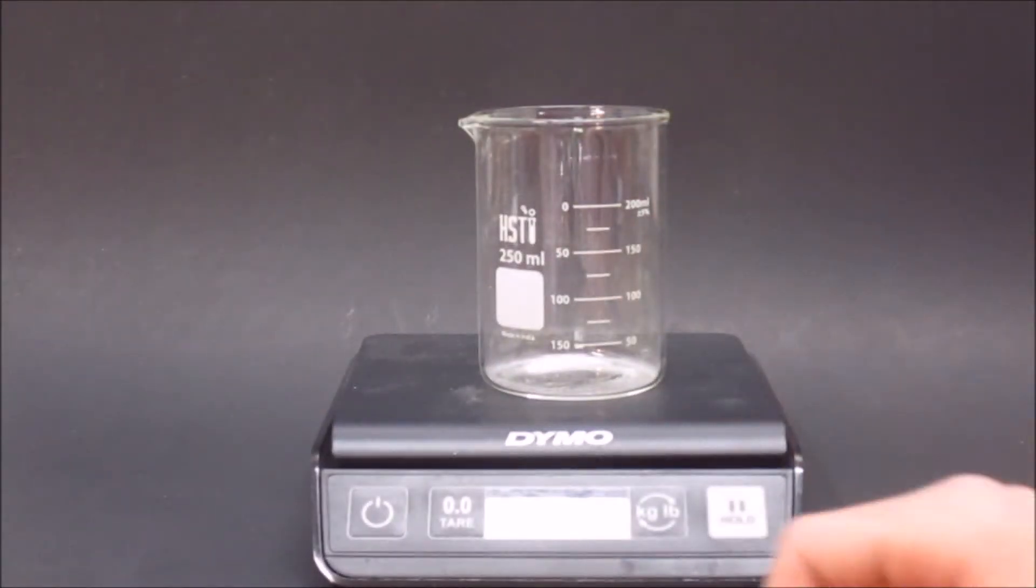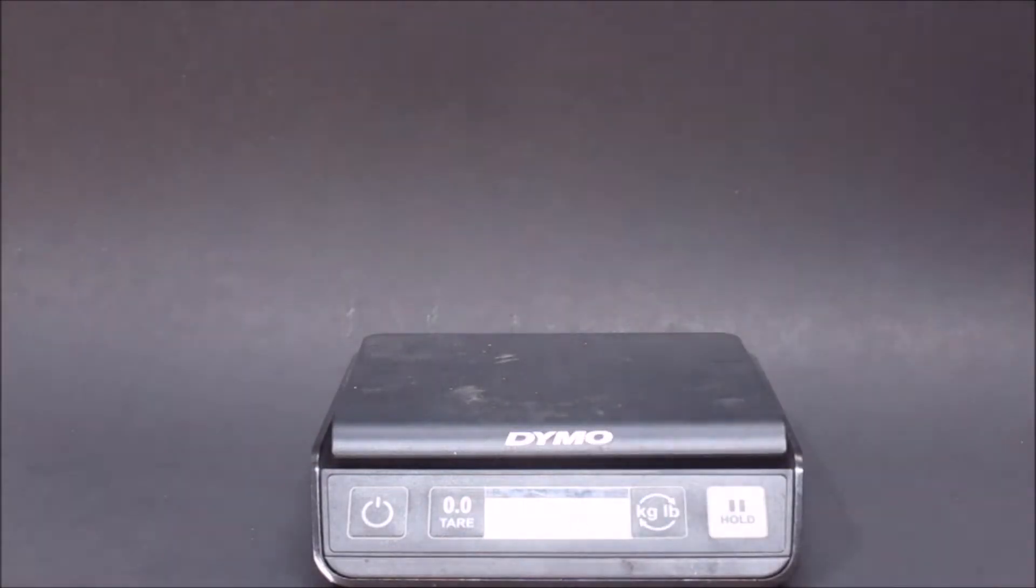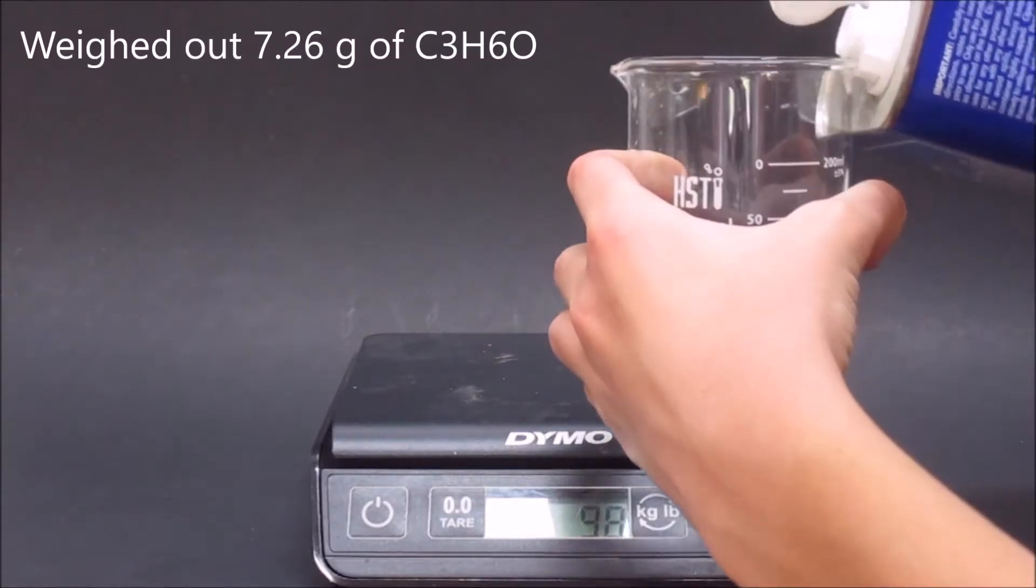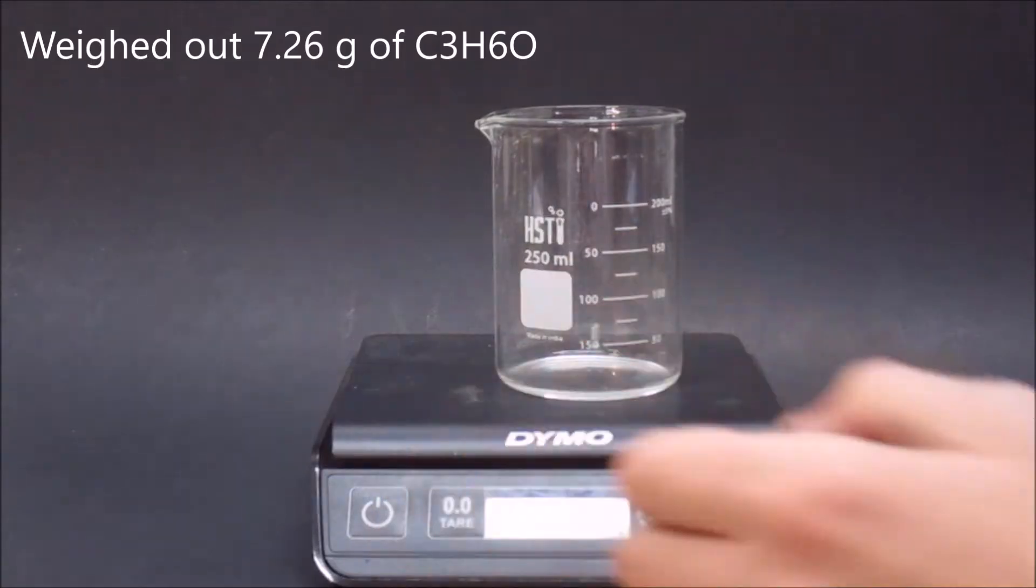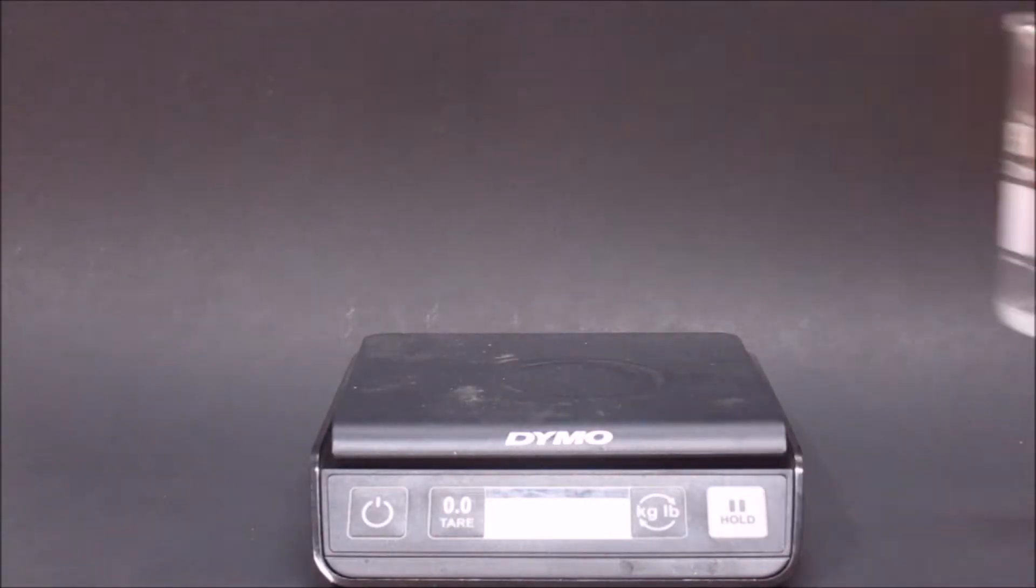I got a new beaker and put it on the scale, and then I weighed out 7.26 grams of acetone. Then I took the beaker off the scale.